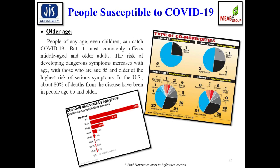While people of any age can catch COVID-19, it most commonly affects middle-aged or older adults. The risk of dangerous symptoms increases with age — those aged 85 and older are at highest risk. In the United States, about 80% of deaths from the disease have been reported in people aged 65 and above. Age distribution graphs illustrate the relationship between age and susceptibility to COVID-19.